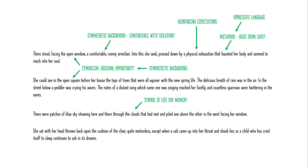We're then told she sat with her head thrown back upon the cushion of the chair, quite motionless, 'except when a sob came up into her throat and shook her as a child who has cried itself to sleep continues to sob in its dreams.' The way she's being described — head thrown back, quite motionless — is reinforcing that physical exhaustion we heard earlier. Then we get this analogy comparing her to a child, which is a classic move when describing women, because under sexist ideology women and children have a lot in common: that inability to control their emotions, the vulnerability, the need to be dependent on somebody. So again the writer is reinforcing those expectations of Mrs. Mallard as your typical woman of the time.